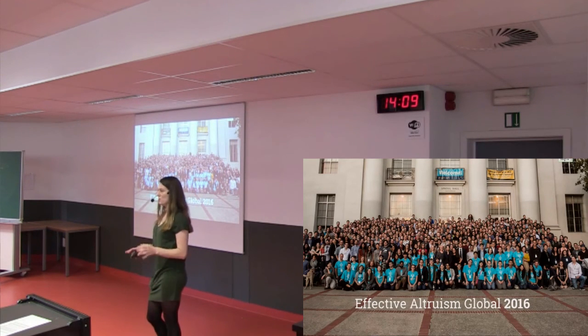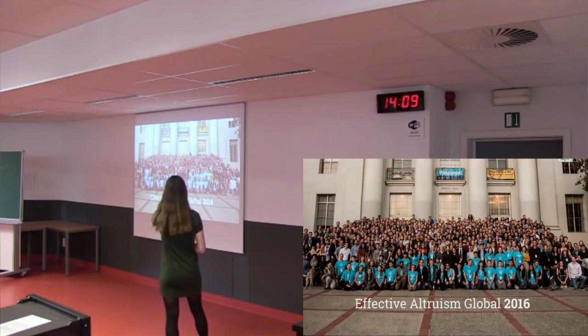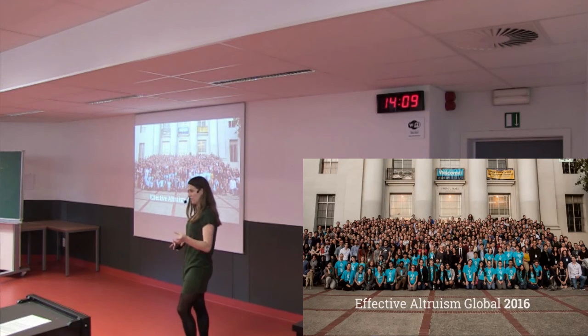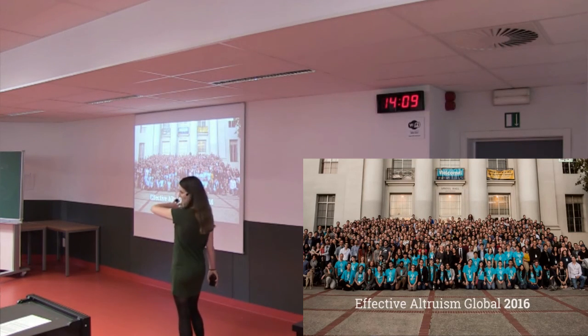So, effective altruism is a community of people all over the world who take these values and these questions really seriously. So, we had a big conference where we had over 1,000 people, and worldwide there are somewhere between 10,000 and 20,000 people who committed to using evidence and reason to find the very best interventions. So, the people in this crowd, the people all over the world,